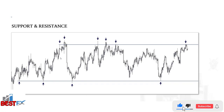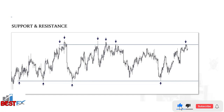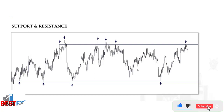Looking at this chart, price is clearly getting rejected at the top — bouncing over and over again — making it an area of resistance. At the bottom, price also bounces five times, forming an area of support. Many traders draw a single line at resistance and say if price closes above it they'll go long. But as you can see, a candle clearly closed above this resistance, and price simply reversed — meaning using a single line poses a problem.